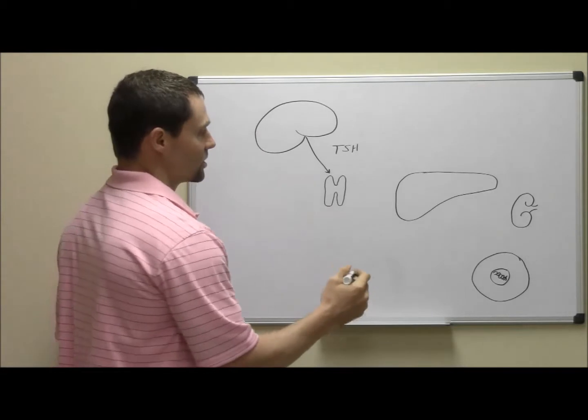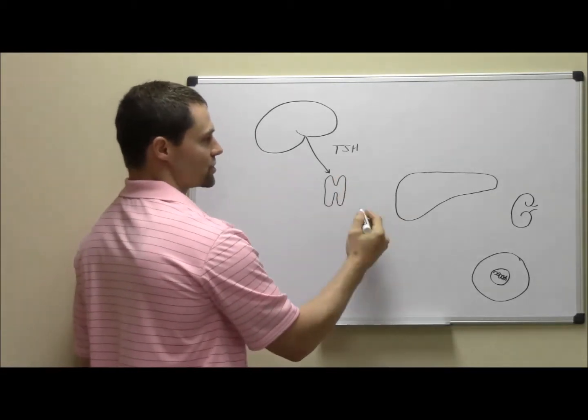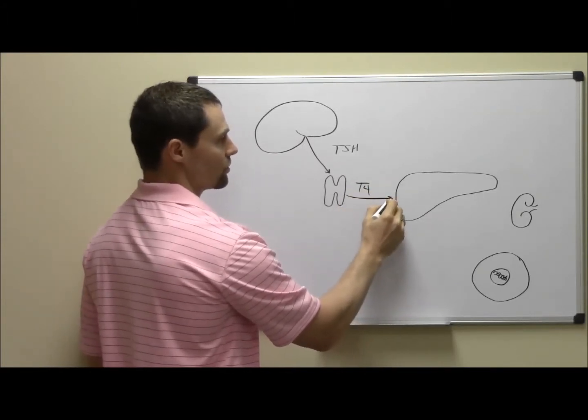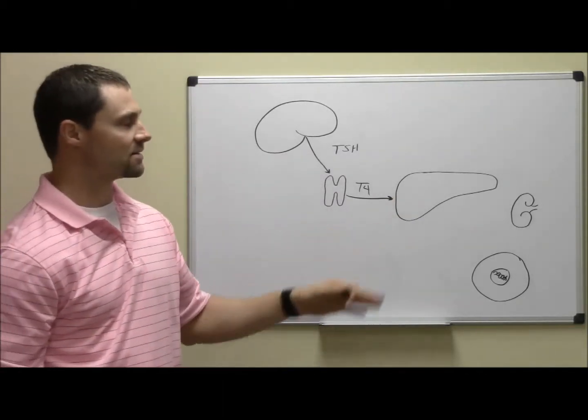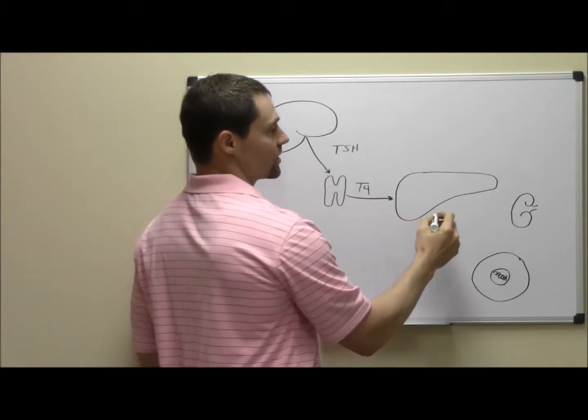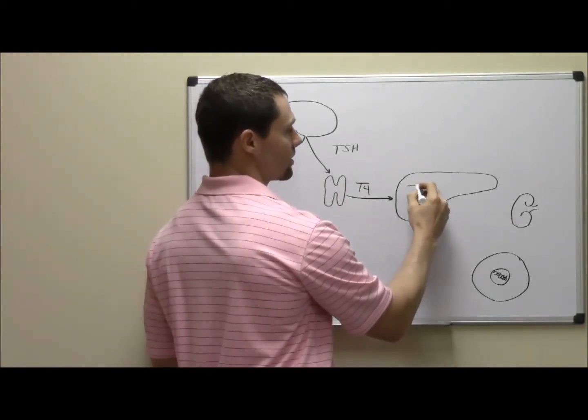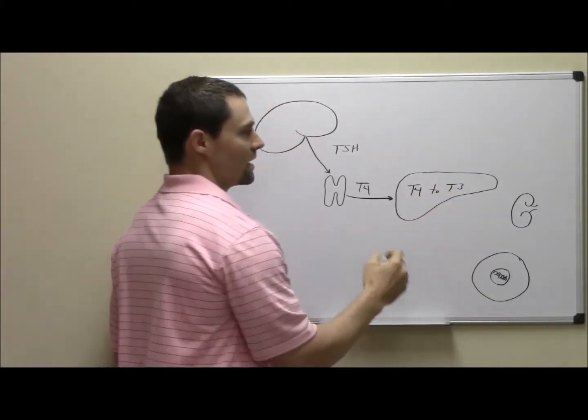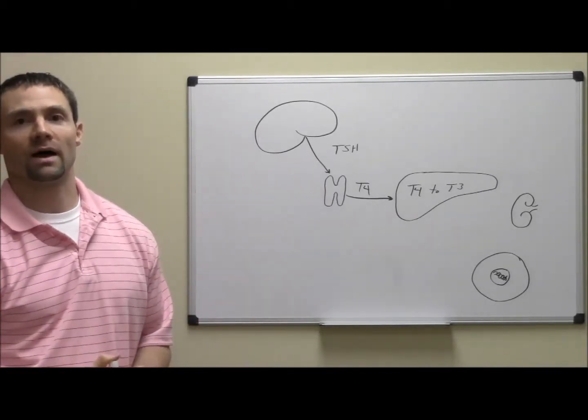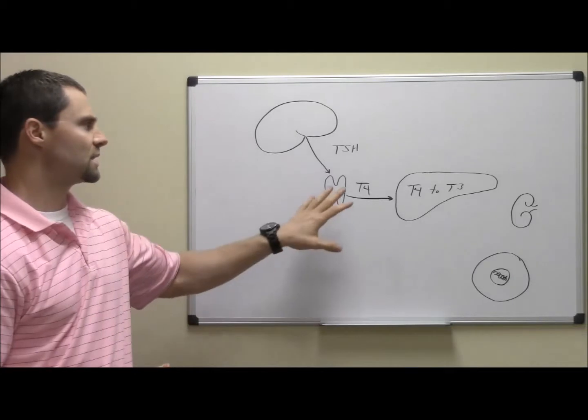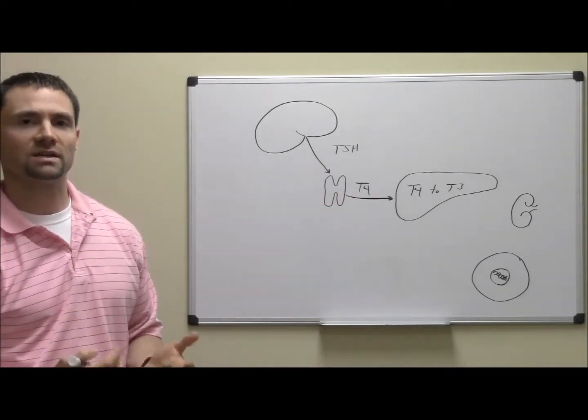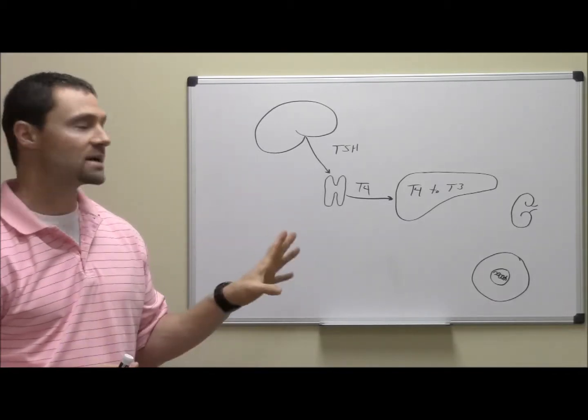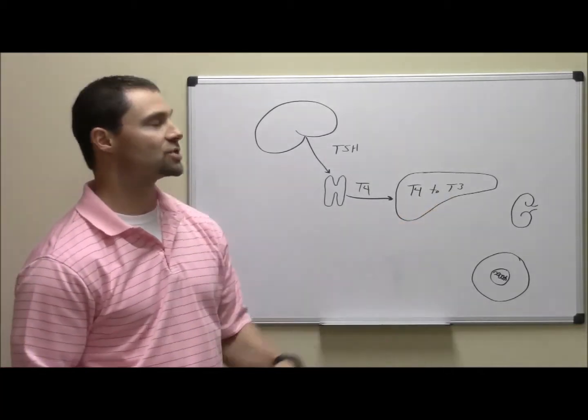From here, once this TSH stimulates the thyroid, you're going to get the production of what's known as T4. And this T4 is going to be shuttled over to the liver and to the kidneys to some degree. What you're going to see is that in the liver you're going to get conversion of this T4 to T3. And the conversion of T4 to T3 is pretty important because most of the time when we talk about thyroid hormones we generally leave the conversation at T4, but the important thing is that T4 is not the actual active thyroid hormone in the body. For activity to occur in the body based off of thyroid hormone, you need to make sure that conversion to T3 takes place.